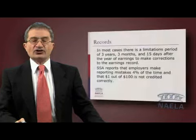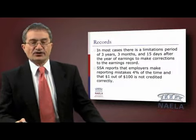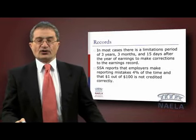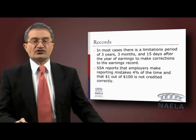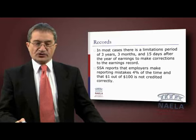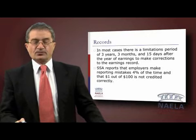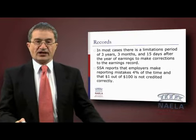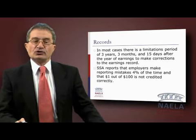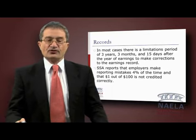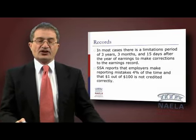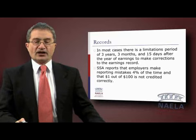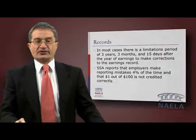In most cases, there is a limitations period of 3 years, 3 months, and 15 days after the year of earnings to make corrections on the earnings record. So it's important to keep track of your earnings to make sure Social Security has it right. Social Security reports that employers make reporting mistakes 4% of the time and that $1 out of $100 is not credited correctly.